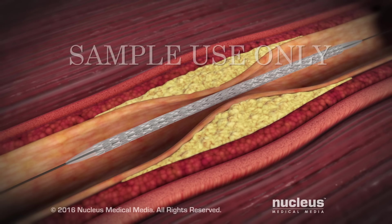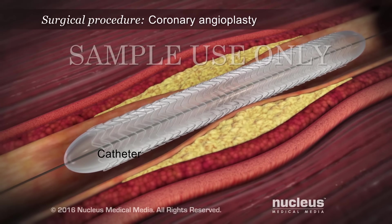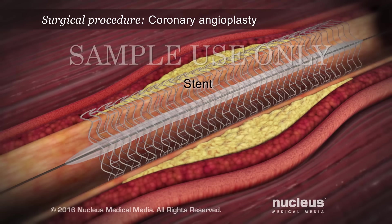The procedure you had may have been a coronary angioplasty. During a coronary angioplasty, a balloon-tipped catheter inflates inside your blocked coronary artery to open it. The procedure may have involved placing a stent to help prop the artery open. This is usually a thin metal mesh that acts as a scaffold.